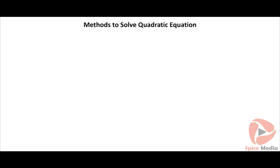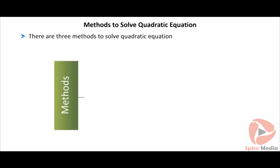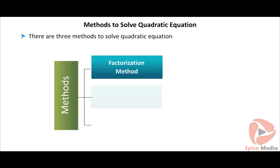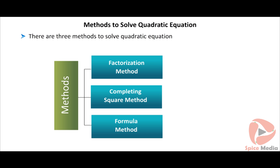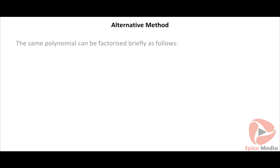There are three methods to solve quadratic equations: the factorization method, the completing square method, and the formula method. In this topic we will learn about the first two methods — that is, the factorization method and the completing square method. The same polynomial can be factorized briefly as follows.